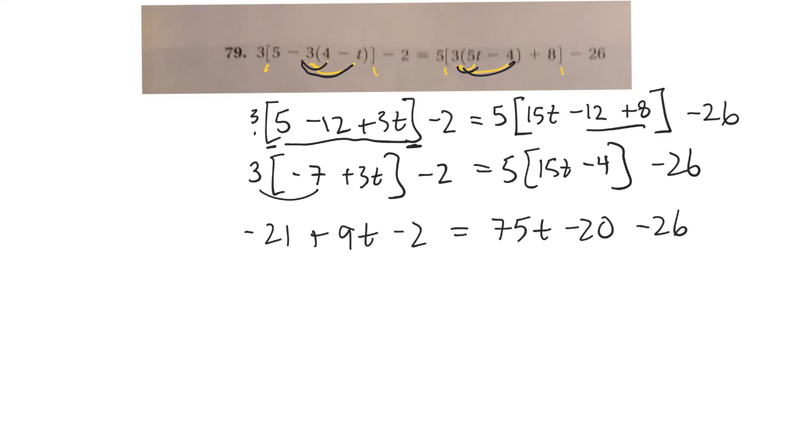Now I can move t's to one side, numbers to the other side, but maybe it makes sense to combine what's on each side that's alike first. So negative 21 and negative 2 is negative 23. I'll write that second. Equals 75t.